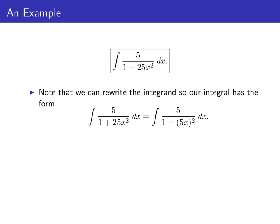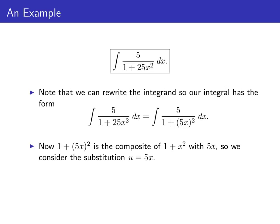Note that we can rewrite the integrand so that it has the form 5 over 1 plus the quantity 5 x squared. And 1 plus the quantity 5 x squared is the composite of 1 plus x squared with 5 x, with 5 x being the innermost function. So a substitution that we might try would be u equals 5 x.